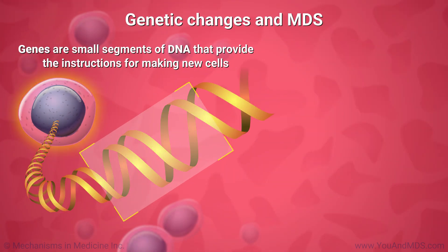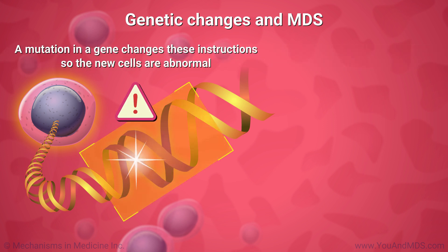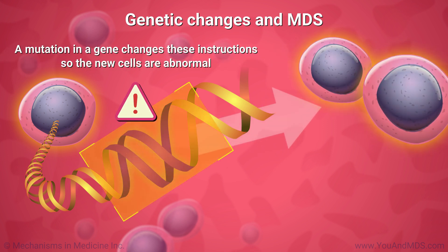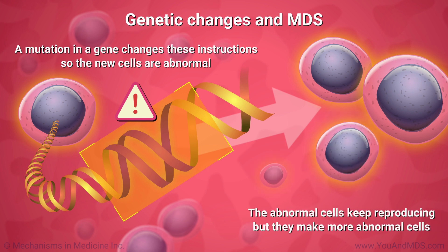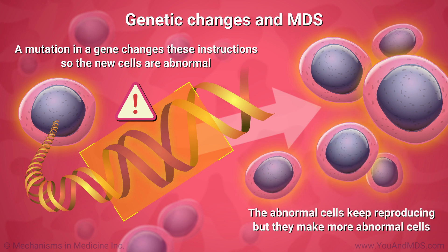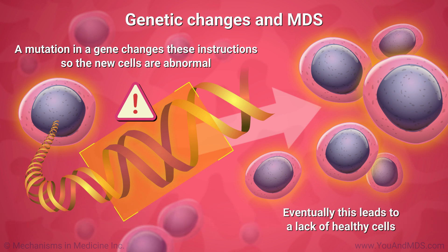Genes are small segments of DNA that provide the instructions for making new cells. A mutation in a gene changes these instructions, so the new cells are abnormal. The cells keep reproducing, just as healthy cells do. But in this case, they make more abnormal cells. Eventually, this leads to a lack of healthy cells.